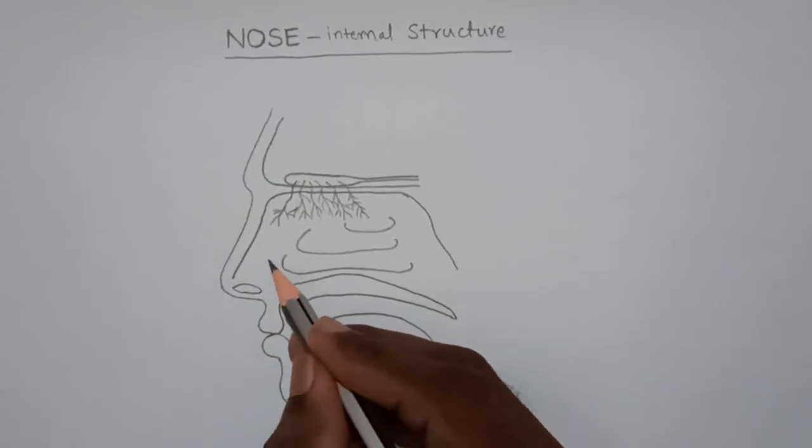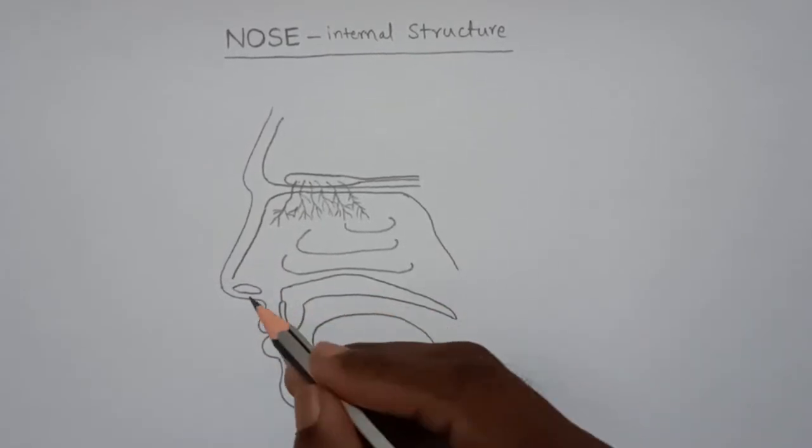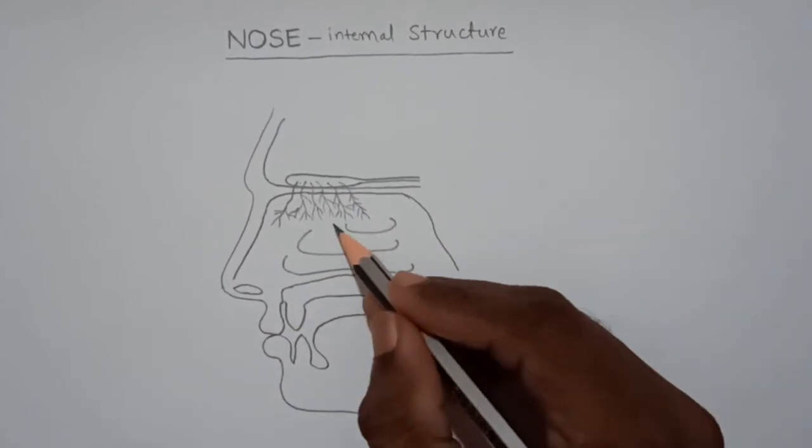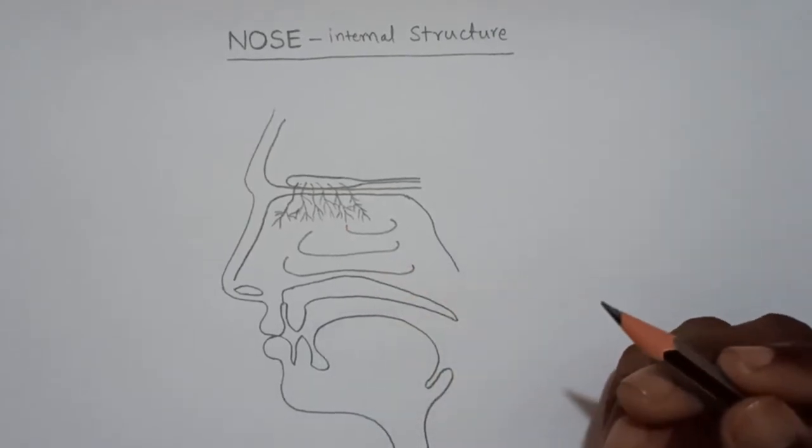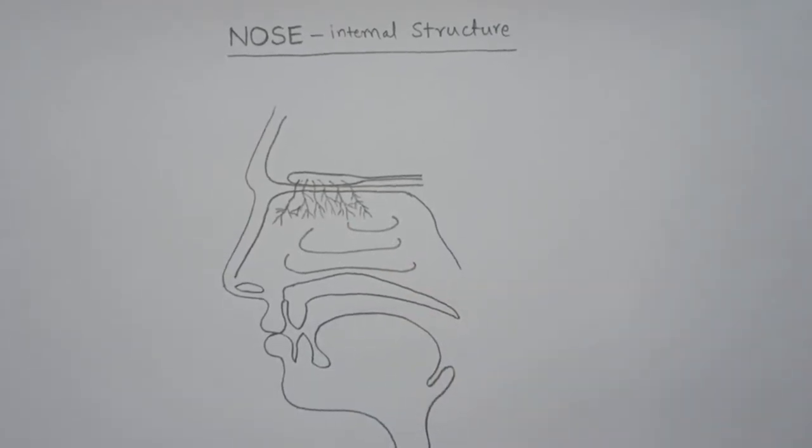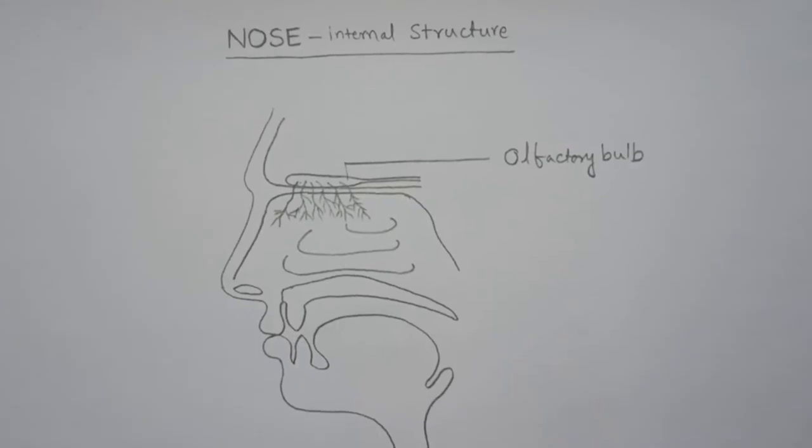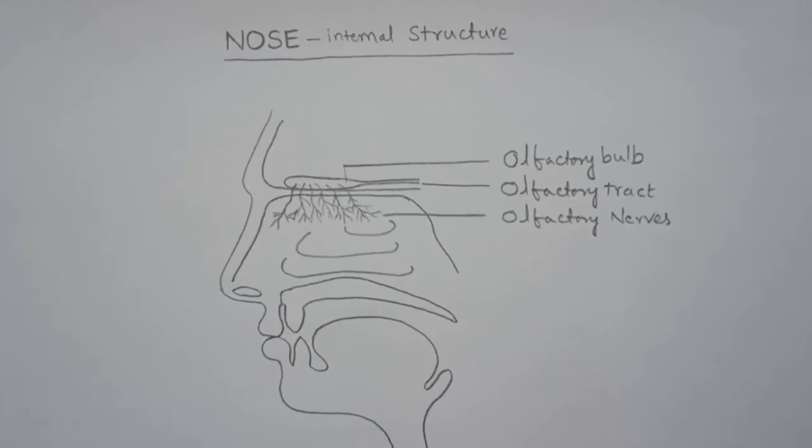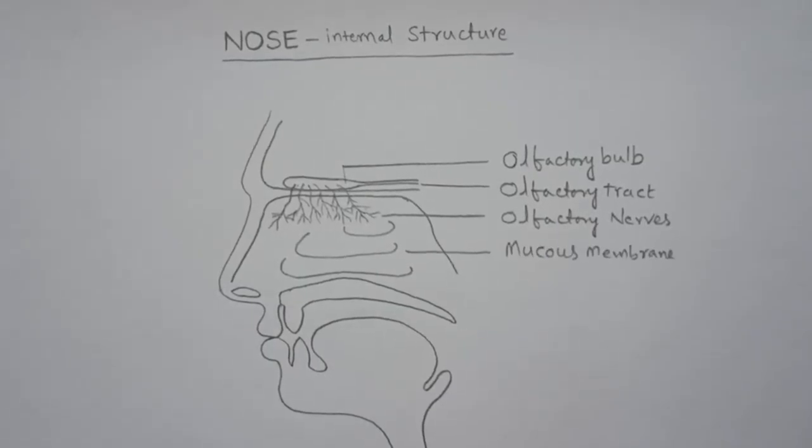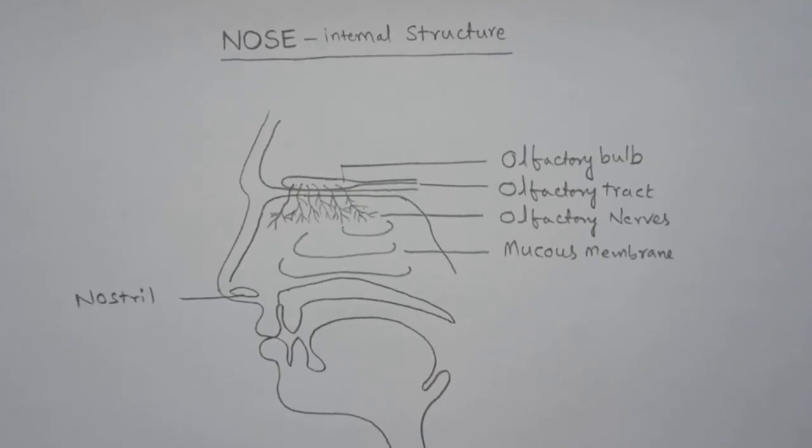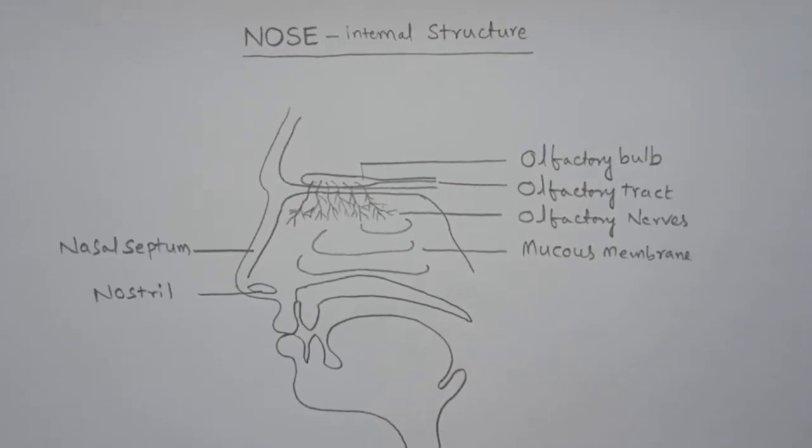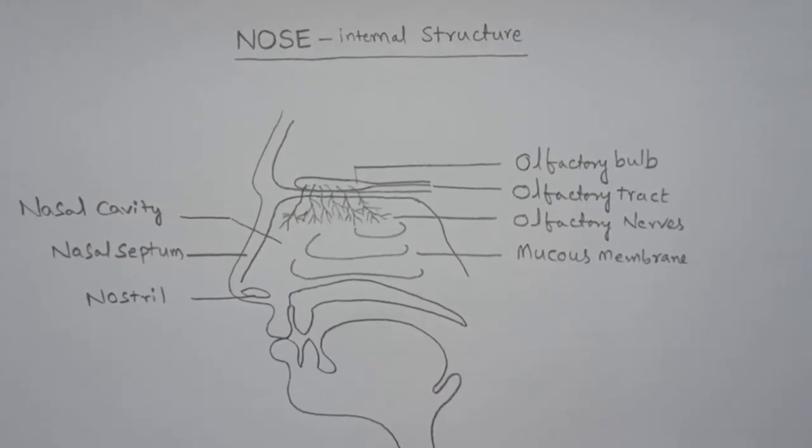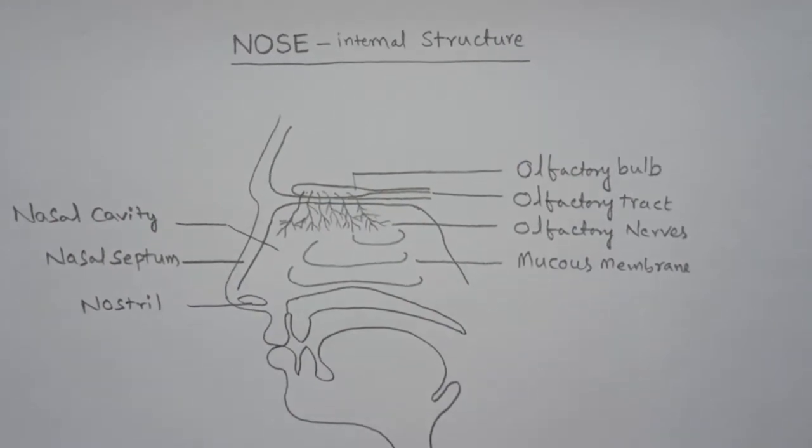So now this nasal cavity, nostril, olfactory bulb, olfactory tract, olfactory nerves, mucus membranes, nostril, nasal septum, nasal cavity. With this the labeling and diagram is completed. Hope you understand how to draw this diagram easily.